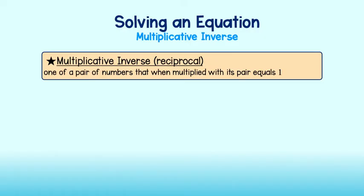Okay, we're almost done. There's one last way that we are able to solve one-step equations. That would be through the use of the multiplicative inverse, or reciprocal. The multiplicative inverse is one of a pair of numbers that, when multiplied with its pair, is equal to 1.